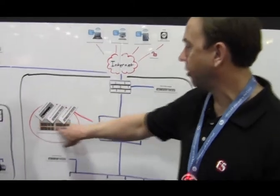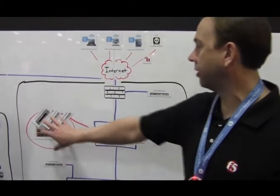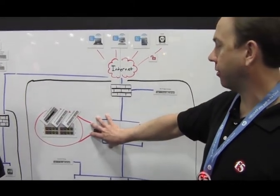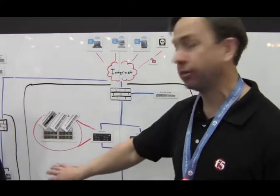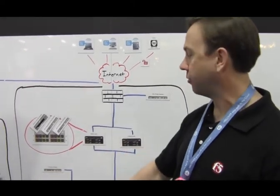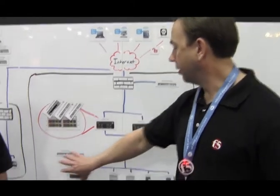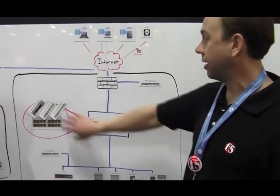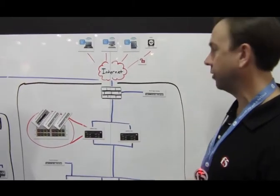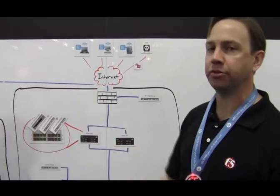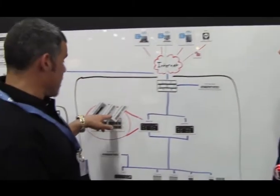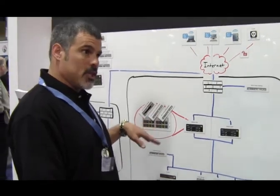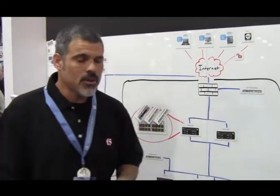Trying to upgrade software for a box that's just running standalone and multi-tenant, where everyone needs the same version of software, you're going to have to go through a service window for all of them. Instead, now you've just got a service window for the people who need the upgrade. And you can run different versions of BIG-IP on each of the blades, right? Right.